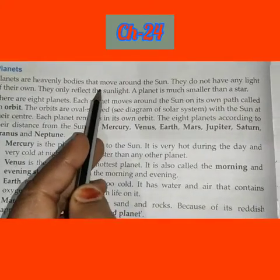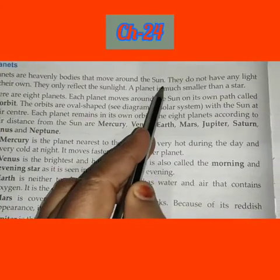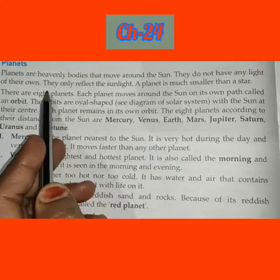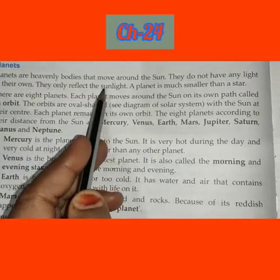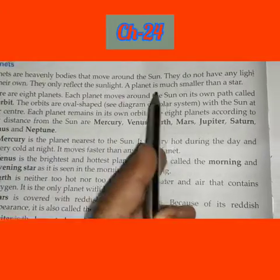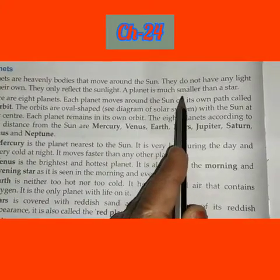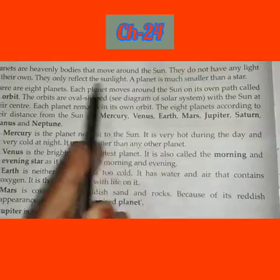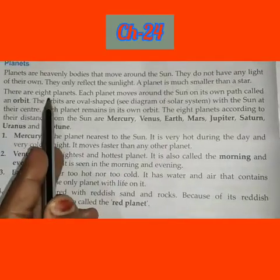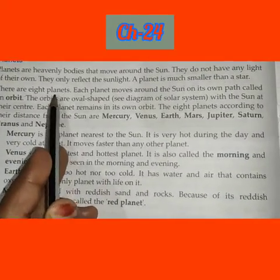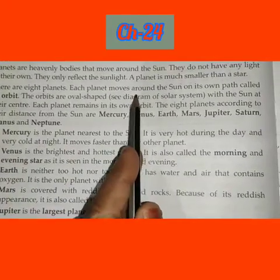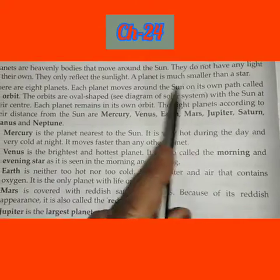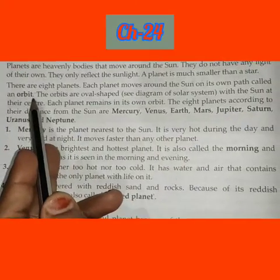Planets are heavenly bodies that move around the sun. They do not have any light of their own — they only reflect sunlight. A planet is much smaller than a star. There are eight planets in total. Each planet moves around the sun on its own path, called an orbit.